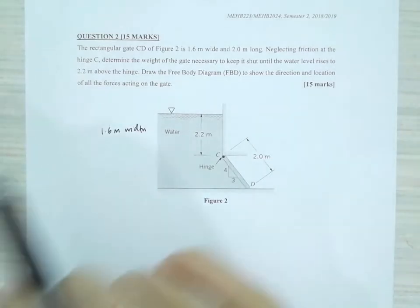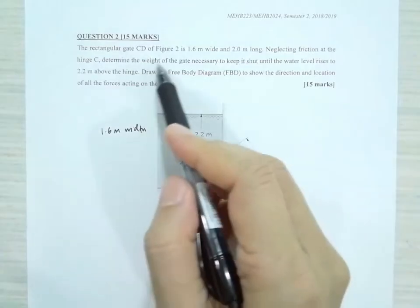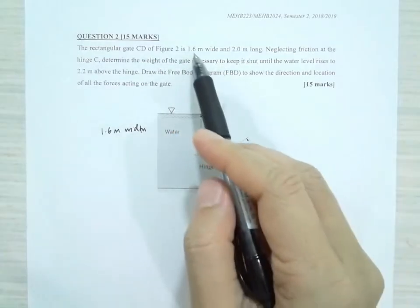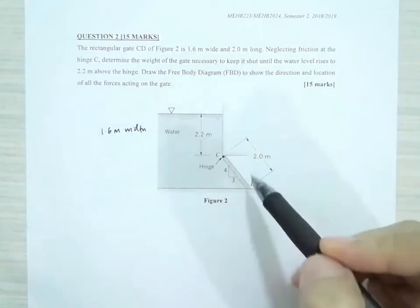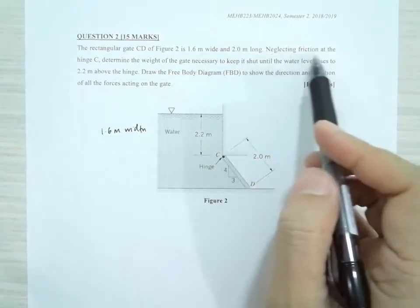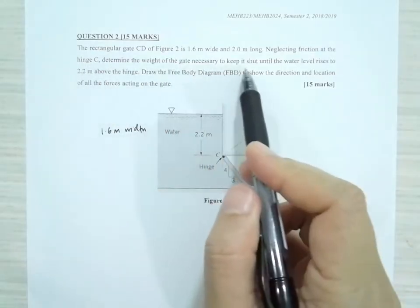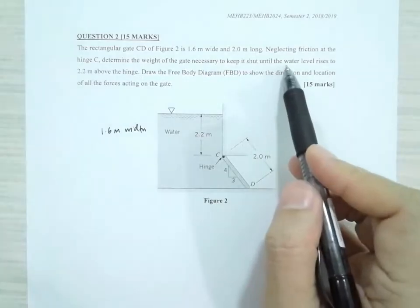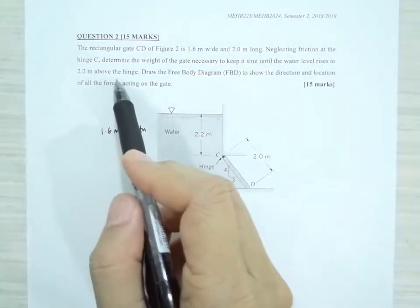In this question, it says that the rectangular gate CD, as shown in Figure 2 here, is 1.6 meters wide and 2 meters long. Neglecting the friction at the hinge C, determine the weight of the gate necessary to keep it shut until the water level rises to 2.2 meters above the hinge.